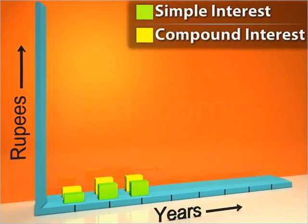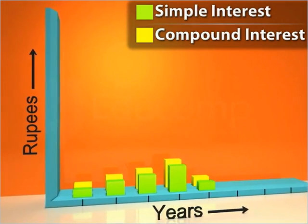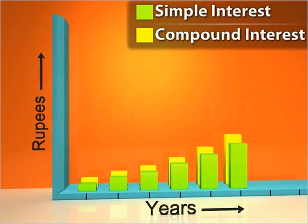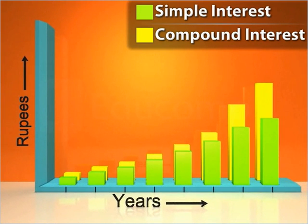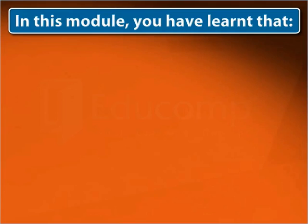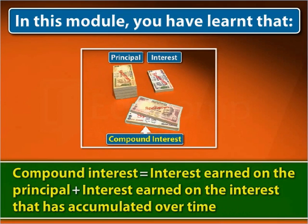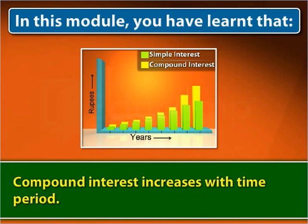The difference can get very large over longer time periods as the amount of compound interest becomes greater with time. In this module, you've learned that compound interest is the interest earned on the principal plus the interest earned on the interest that has accumulated over time. Compound interest increases with time period.